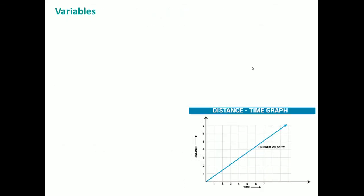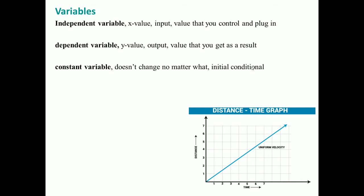Now we've got to talk about some variables. There are three types: independent, dependent, and constant. Your independent variable is the x value that you control and plug in. Your dependent variable changes depending on the independent variable. That makes sense because dependent means it depends on something. Your constant value never changes. You might see your constant value as your initial condition or the parameters of the question.